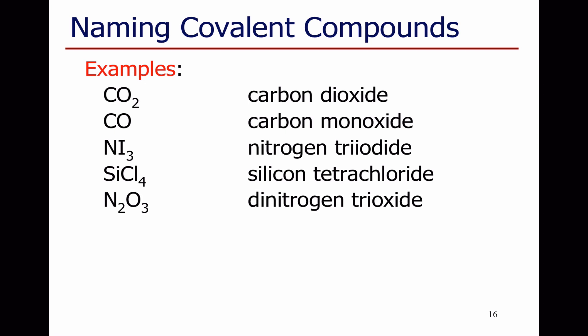N2O3. We have nitrogen and oxygen. Nitrogen's on the left in the periodic table, so we'll name nitrogen first. This time we have two nitrogens, so we have to add a di to the first name. We have dinitrogen. We have three oxygens, and so we have trioxide. Dinitrogen trioxide.